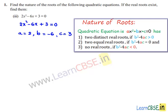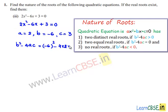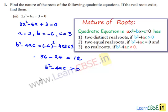Now let us find the discriminant b² - 4ac. This equals (-6)² - 4 × 2 × 3 = 36 - 24 = 12. Since b² - 4ac = 12, which is greater than 0, the given equation has two distinct real roots.